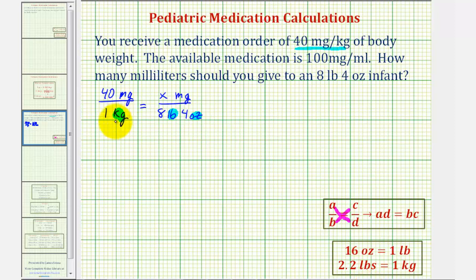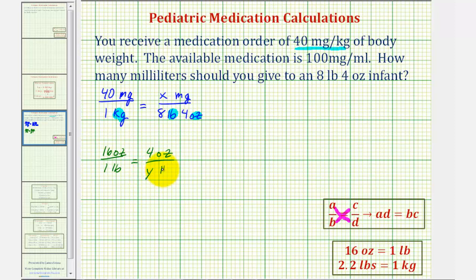We can say that 16 ounces is to one pound as four ounces is to an unknown number of pounds, we'll call it Y pounds. Notice in this case, the units on top and on the bottom are the same.